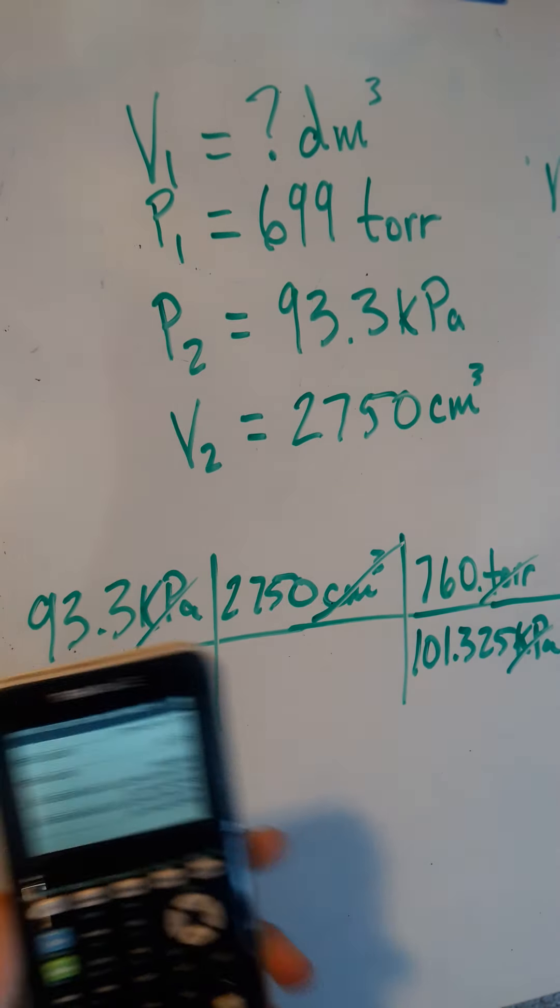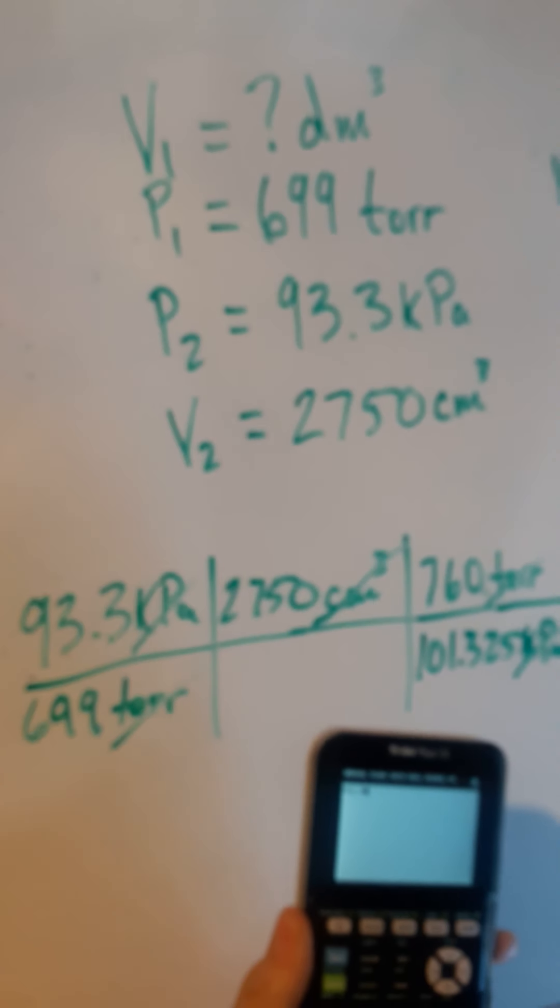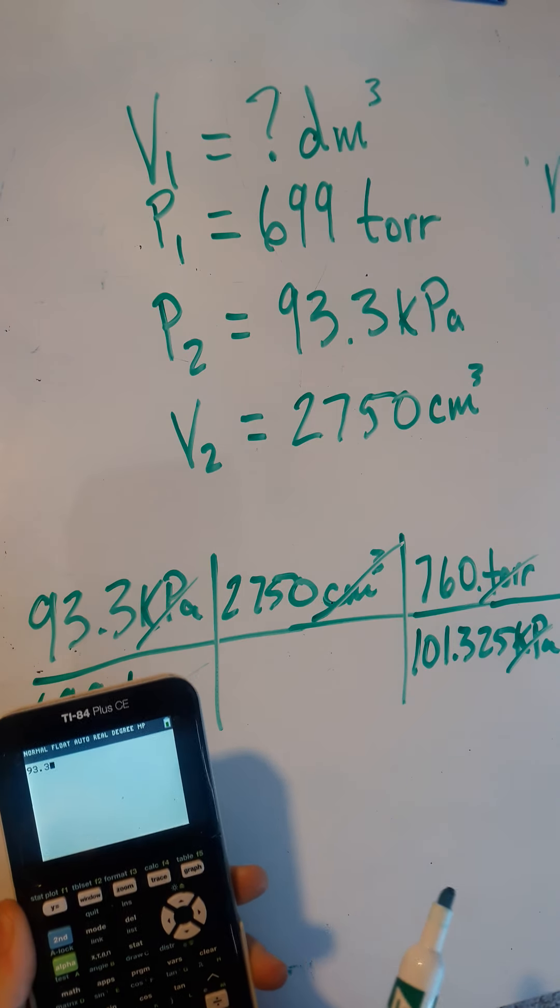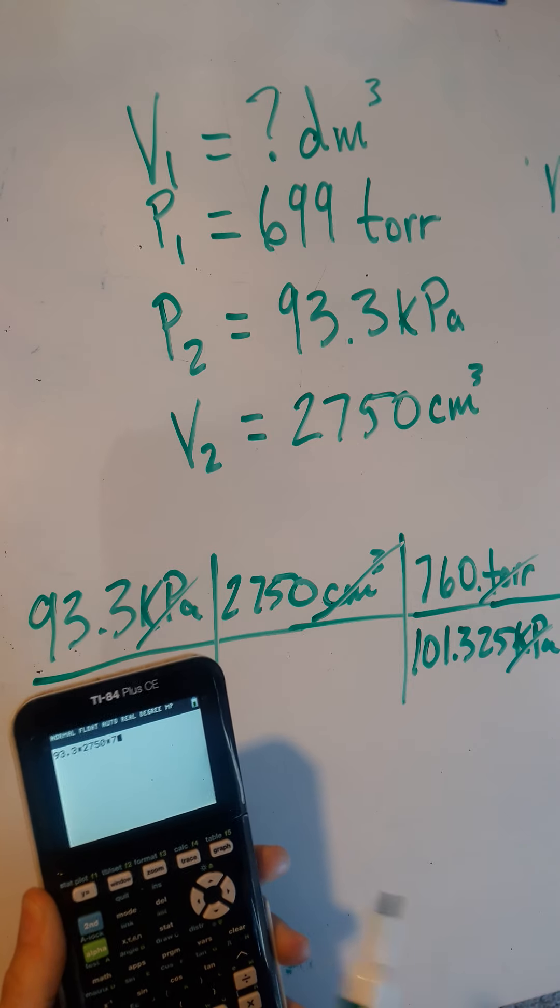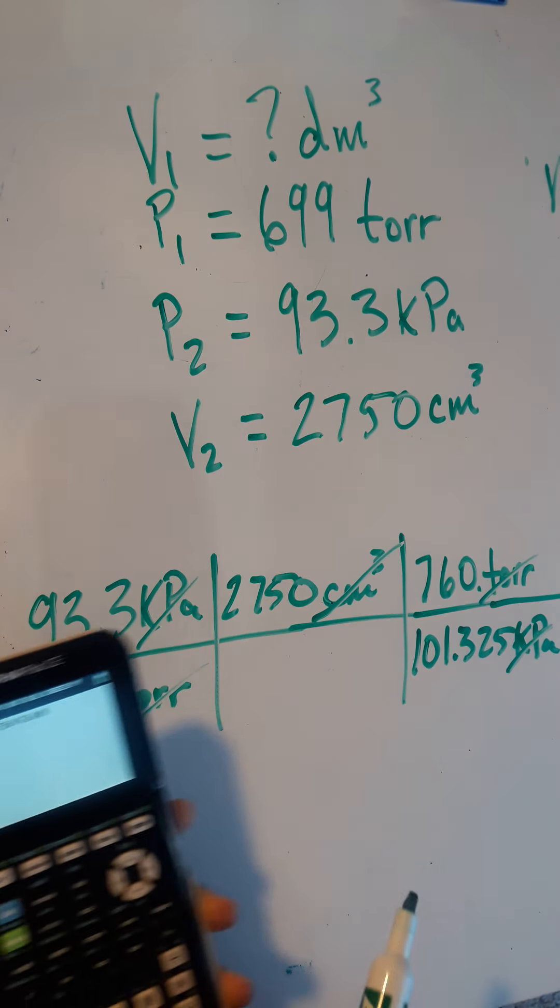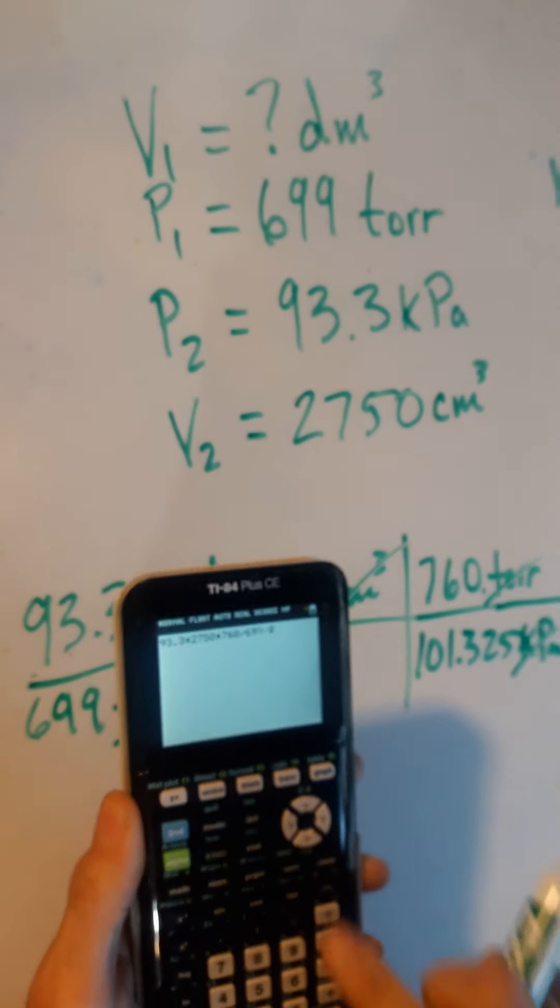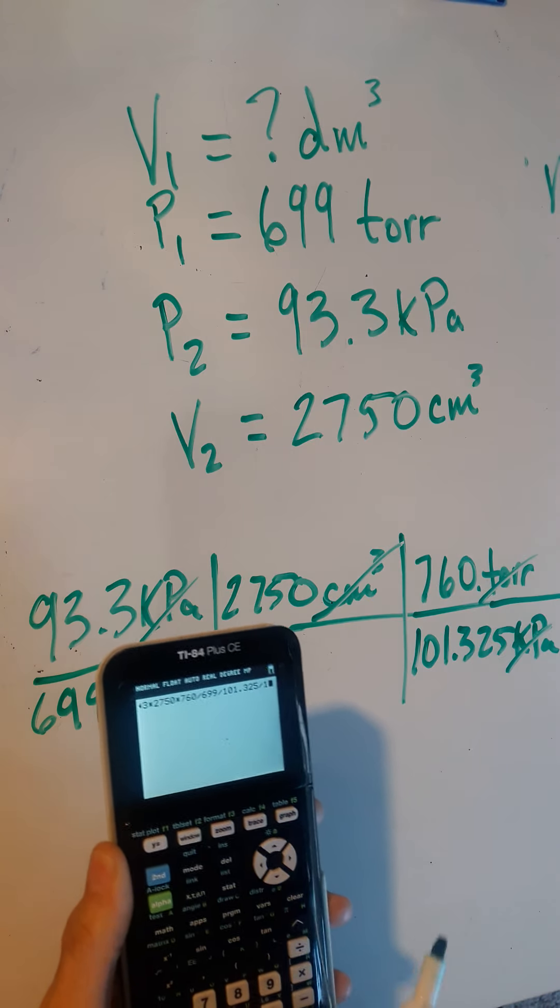So take my 93.3 kilopascals. I'm just going to multiply everything on the top and divide by everything on the bottom times 2750 times 760 times one divided by 699 divided by 101.325 divided by 1,000.